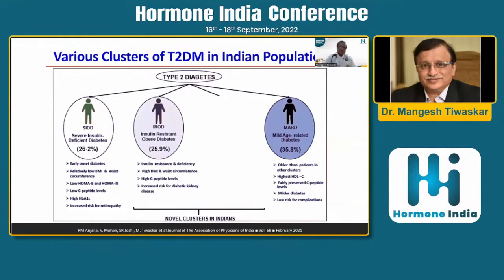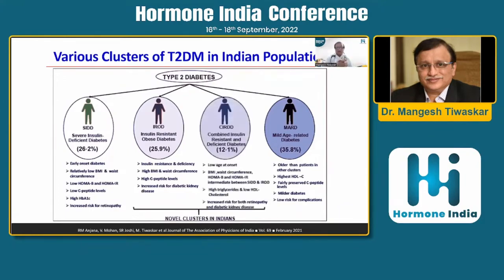The third cluster is called IROD — Insulin Resistance Obese Diabetes, or obesity-related diabetes — comprising around 25% of patients. These patients have obesity and higher insulin resistance but fairly well-preserved beta cell function. They are vulnerable to develop both diabetic kidney disease and retinopathy, though diabetic kidney disease is much more common in this group.